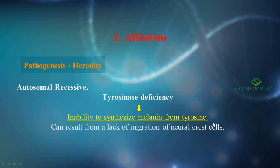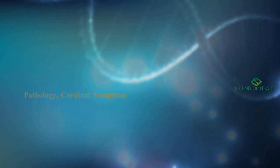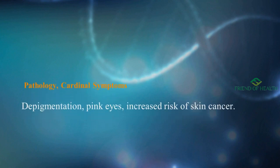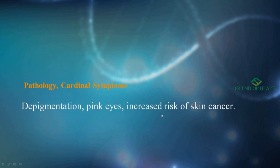In UPSC you need to know the concept behind the disease, not just high-yield points, and AIAPGT is also reaching that level. The cardinal features and pathology of albinism are: depigmentation, pink eyes, and increased risk of skin cancer. If a case scenario describes depigmentation, pink eyes, and a doctor suggesting increased risk of skin cancer with tyrosinase deficiency, the answer is albinism.